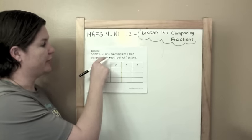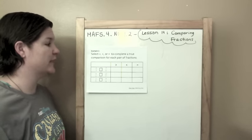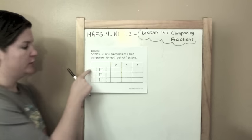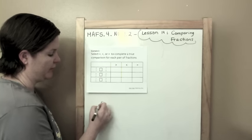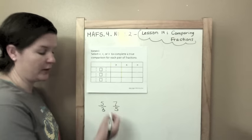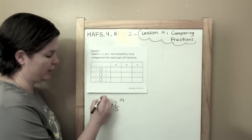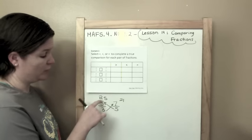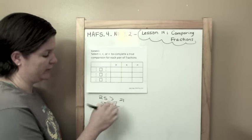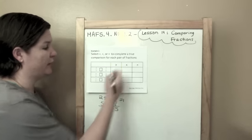Select greater than, less than, or equal to to complete a true comparison for each pair of fractions. In this box, we have 5 thirds and then we have 7 fifths. 3 times 7 is 21. 5 times 5 is 25. 25 is greater. That means that 5 thirds is greater than 7 fifths.